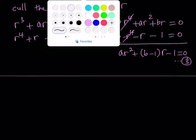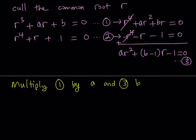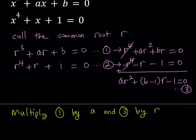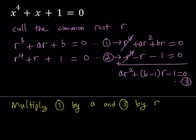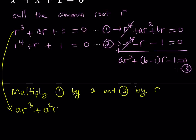The next step is I'm going to multiply number one by A and number three by R. The reason I do that is because I'm going to be able to eliminate the R cubed term. My first equation is R cubed plus AR plus B equals zero. Multiplying that by A gives us AR cubed plus A squared R plus AB equals zero.